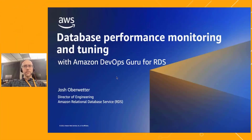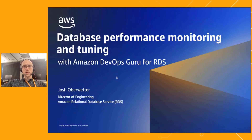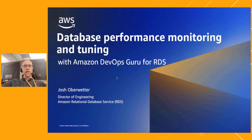Hi, my name is Josh Oberwetter. I'm a Director of Engineering on the Amazon Relational Database Service, or RDS, team. I joined AWS about five years ago to work on the sorts of infrastructure problems that I faced as an application developer earlier in my career. Today I'm very excited to share with you a tool that we built to help customers manage and debug database performance problems.